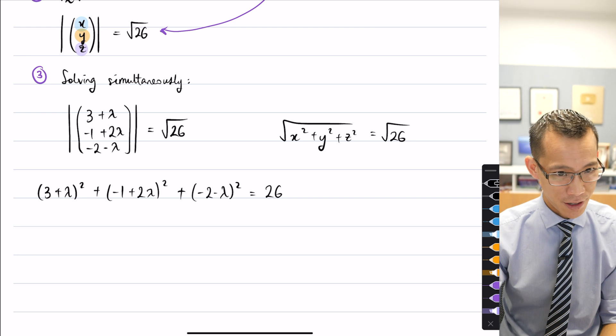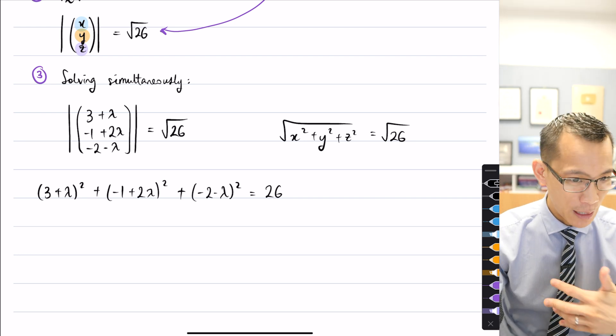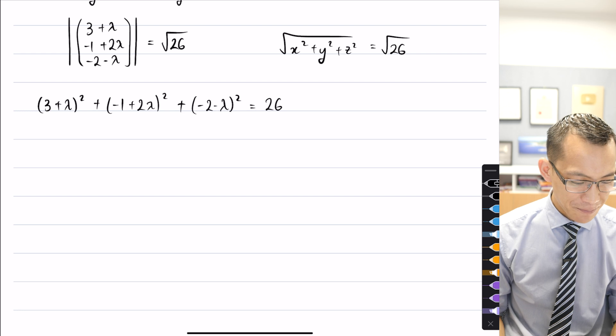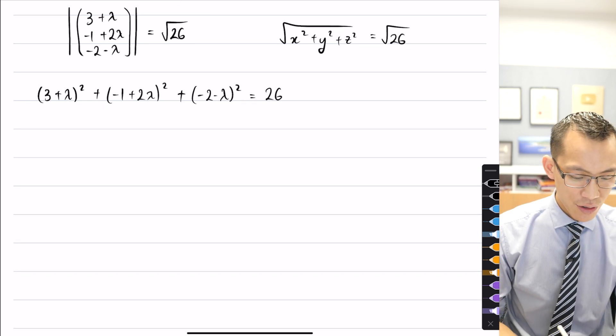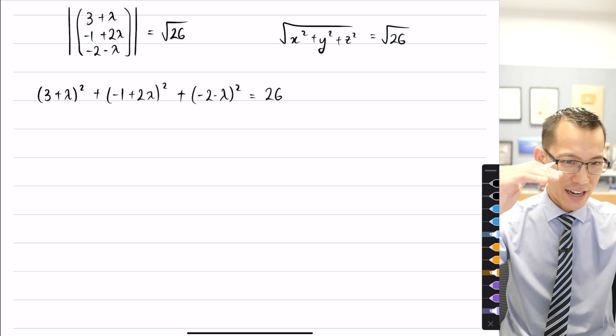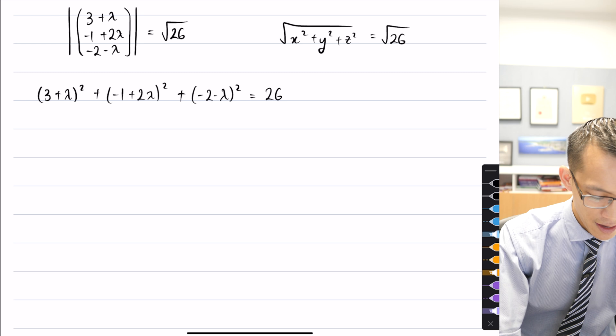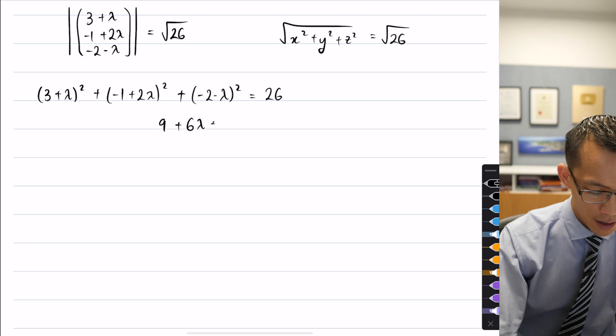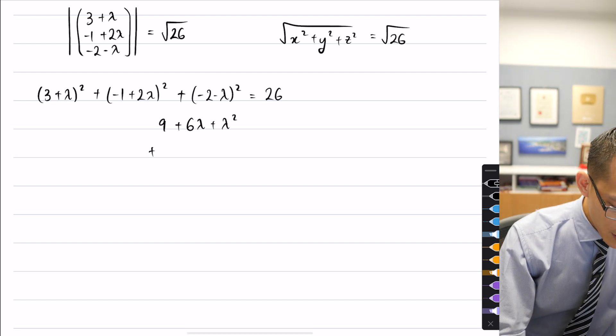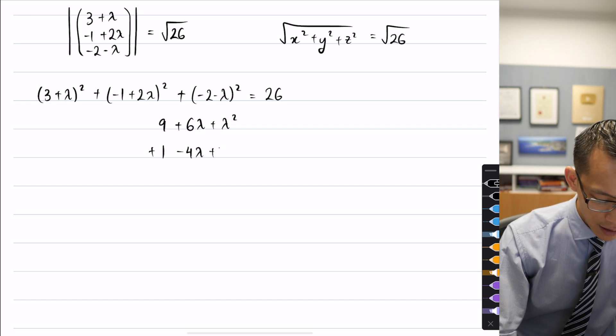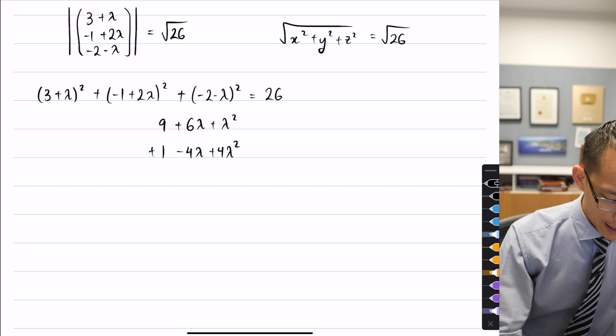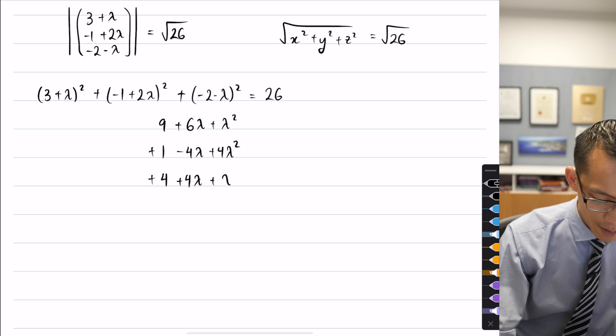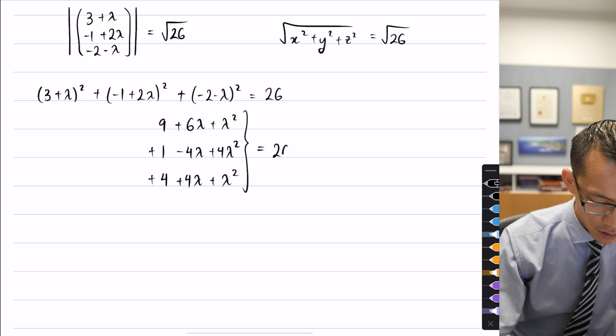Now at this point, you know, hooray, I have some algebra to do. So you guys probably can sort of leap ahead without me. In fact, I'm guessing that's probably what you're already doing. What I'm going to do is I'm going to try and keep up with you a little bit. I'm going to expand everything out. And what I'm going to do, slightly weird, but I'm going to write this expansion on left hand side across three lines. And hopefully you will see why I'm doing that. So first binomial gives me nine plus six lambda plus lambda squared. Next one's going to give me plus one minus four lambda plus four lambda squared. And then what am I getting on the end here? This is going to be four plus four lambda plus lambda squared. All of that is equal to 26.